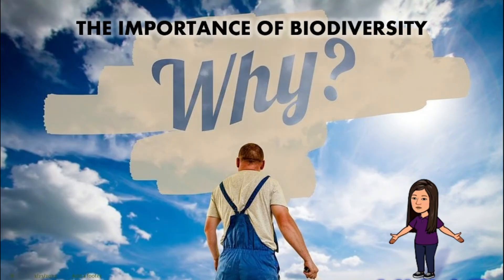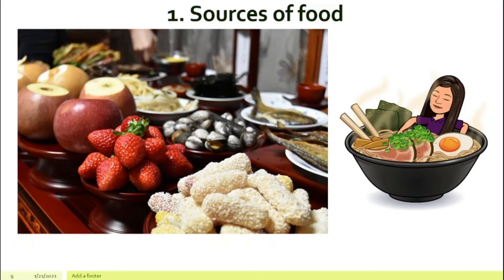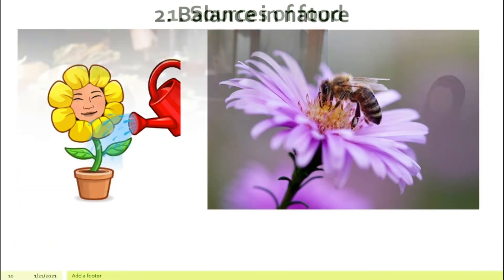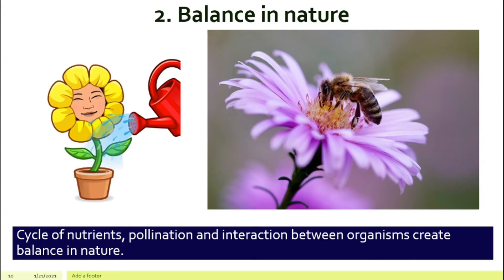Next, why is biodiversity so important? Why do we must have biodiversity? Number one, it is because biodiversity provides us with different sources of food. Animals and plants supply food to humans. Imagine if there's only one type of meat and one type of plant for you to eat — that would be super boring, right? Number two, the cycle of nutrients, pollination and interaction between different types of organisms will create a balance in nature, and that is very important.